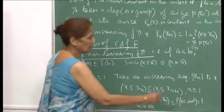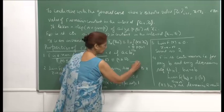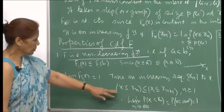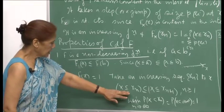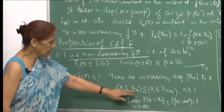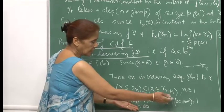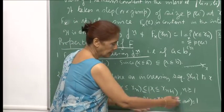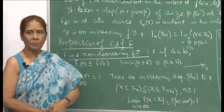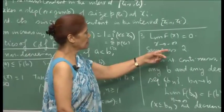Taking an increasing sequence x_n to infinity, the events x ≤ x_n are nested and merge into x < infinity, covering all possible values of x. Therefore, the limit equals probability x < infinity, which must be 1. Third, the limit of F_x as x goes to minus infinity is 0: taking a decreasing sequence, the events eventually become empty, so the probability converges to probability of the empty set, which is 0.